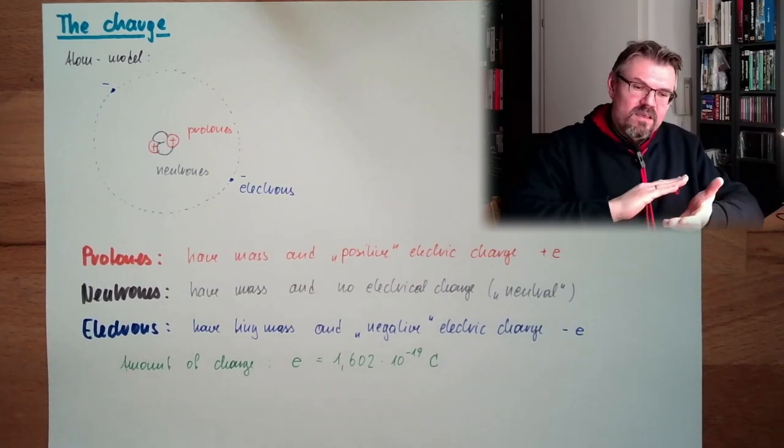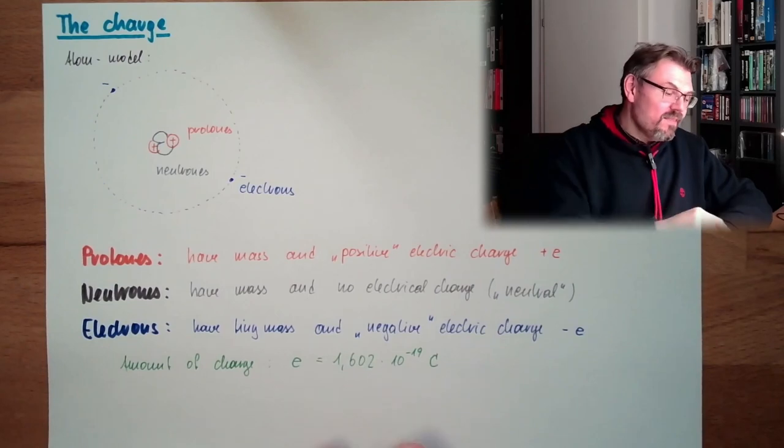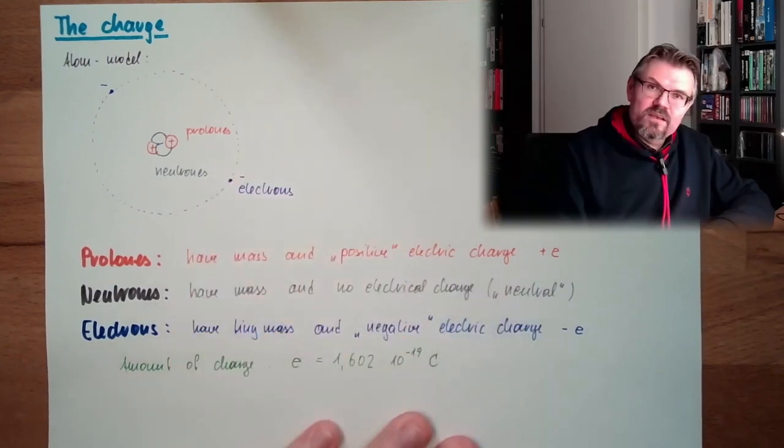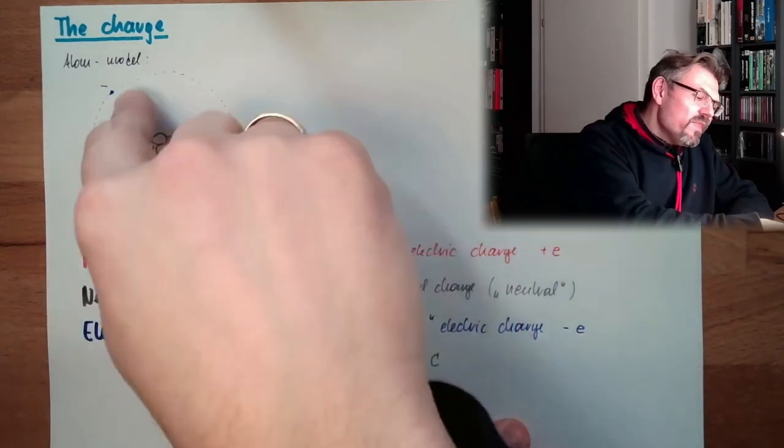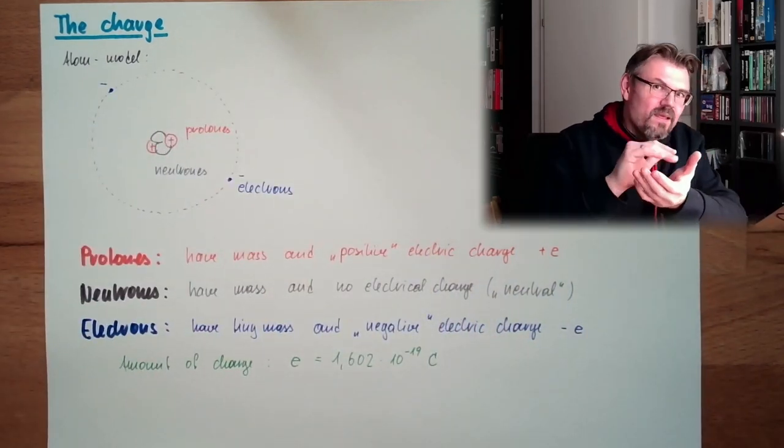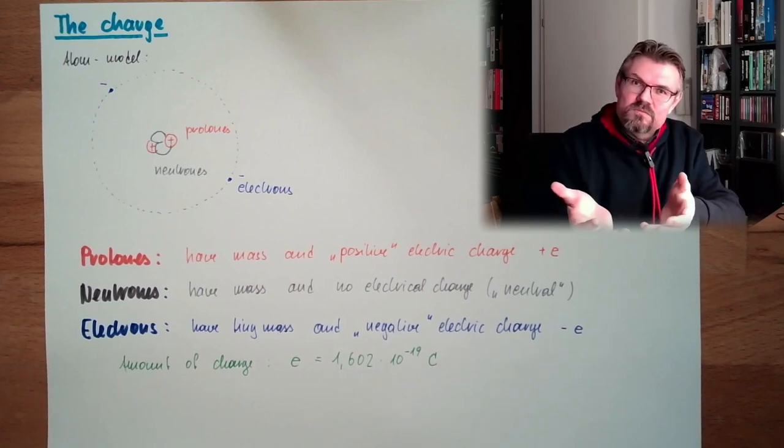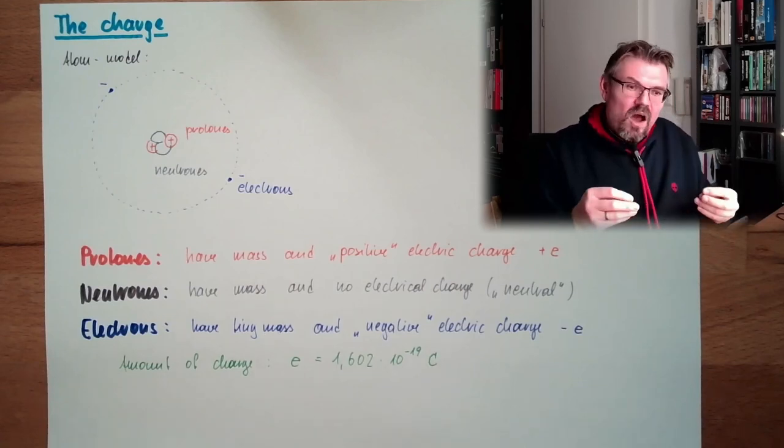And what is happening if you stroke some materials like amber for instance, then you are rubbing off some of the electrons. Then you have them on your hand, and the element, the matter, has lack of electrons. And this lack of electrons means now it's charged.